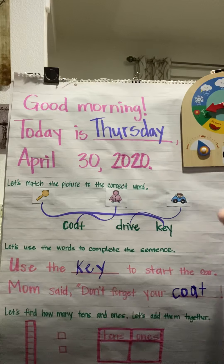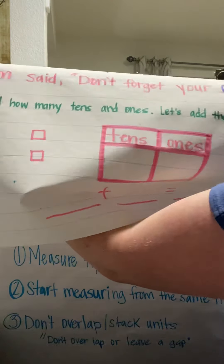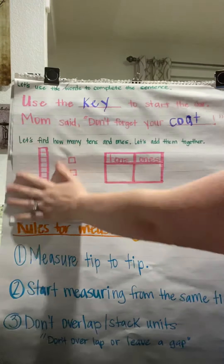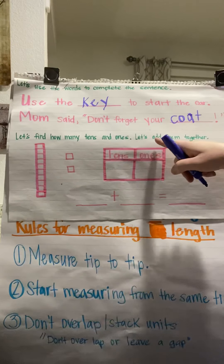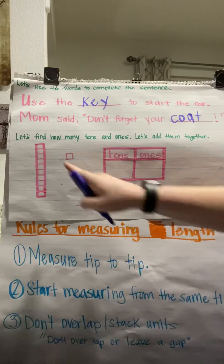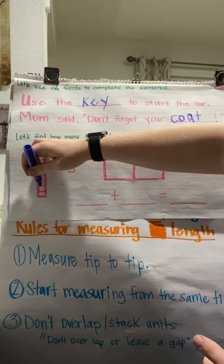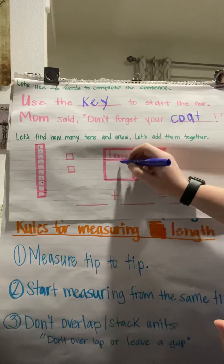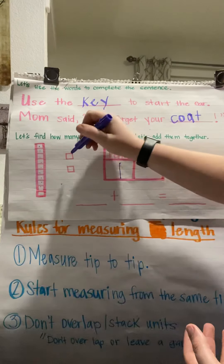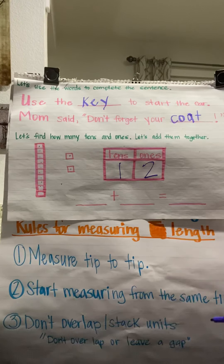And then the last section we have is our math. It says let's find how many tens and ones, and then let's add them together. We have a picture here. We know that this rod here — a rod — and then we have some small cubes. The rod is a 10, right? If we were to count them, it should equal 10: 1, 2, 3, 4, 5, 6, 7, 8, 9, 10. So how many tens do we have, or how many rods? Just one, right? So I put the one in the tens place. How many singles or ones do we have of the little tiny cubes? We have one and two. If we put the one and the two together, it makes the number 12. So our answer should equal 12.